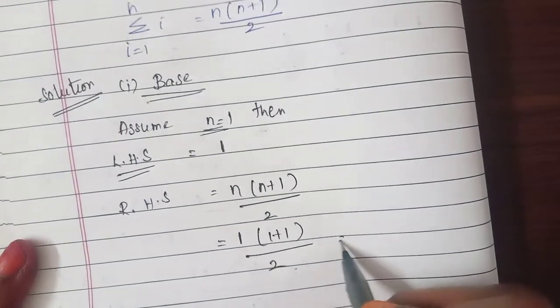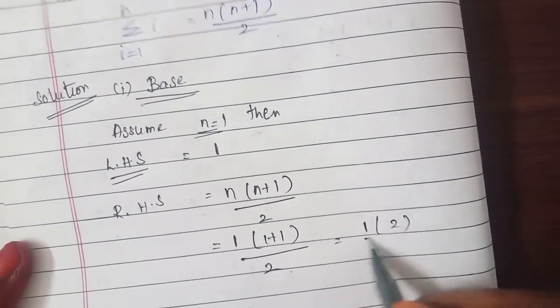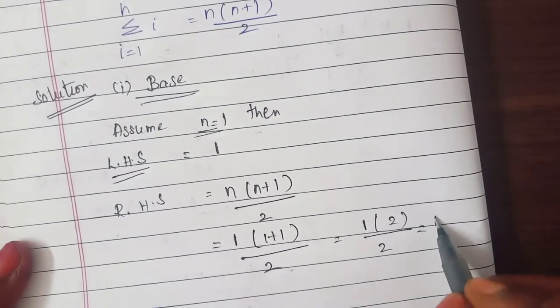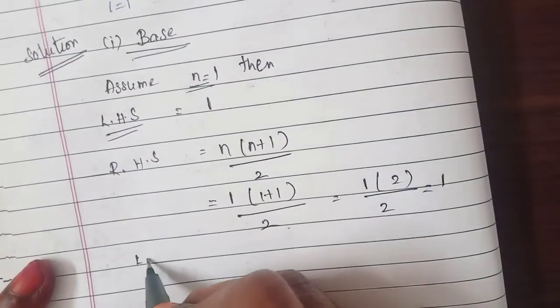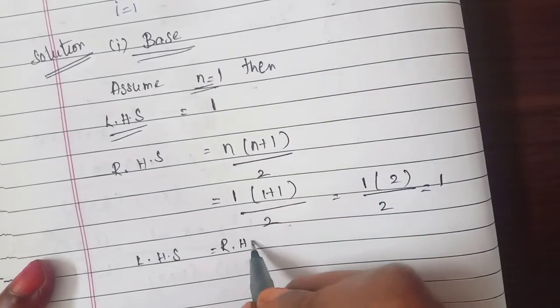So 1, 2 by 2 which is known as 1. So LHS equal to RHS.